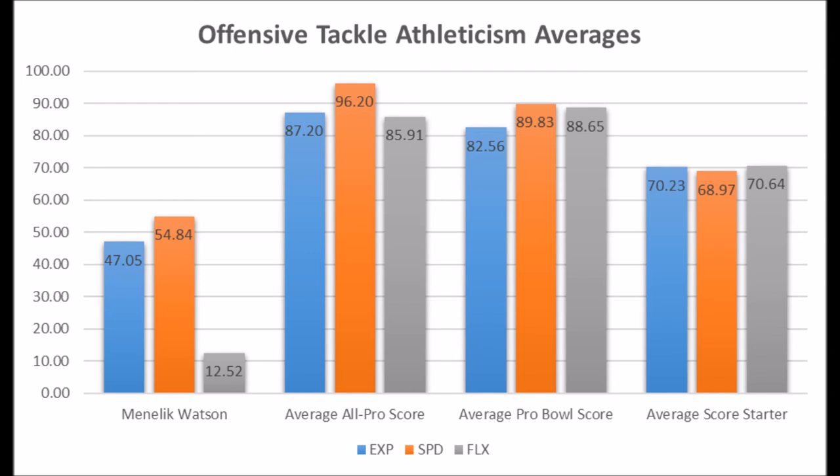This is why you need to be paying attention to athleticism data at the offensive tackle position. It's definitely hard to find a guy who has great athleticism traits, great film, and great all-around physical characteristics for the position. But when you start making concessions, or when you start saying that a guy is a raw athletic upside player when he doesn't have athleticism upside, then you really have to question what people are talking about when it comes to draft evaluation.